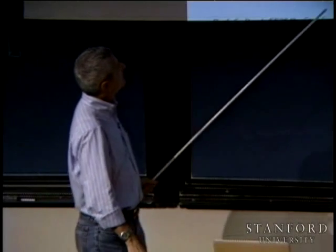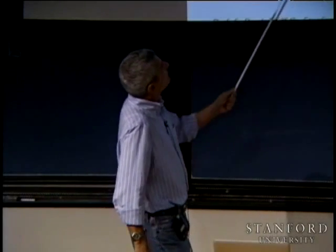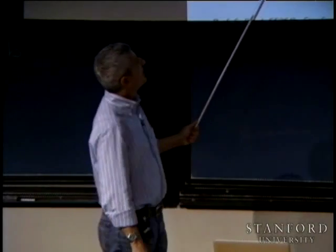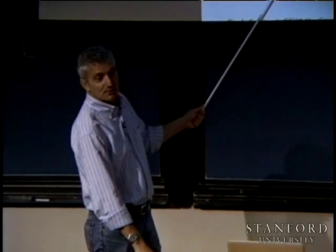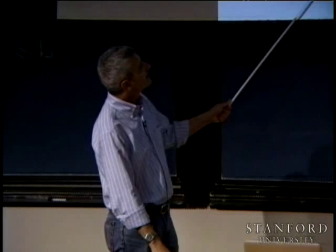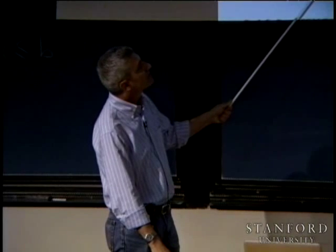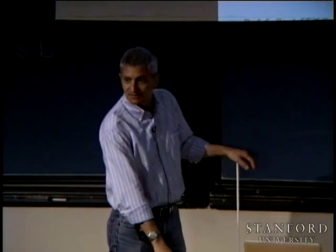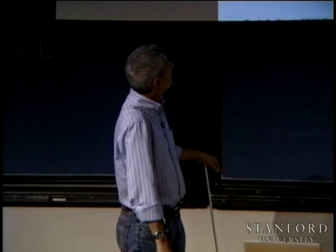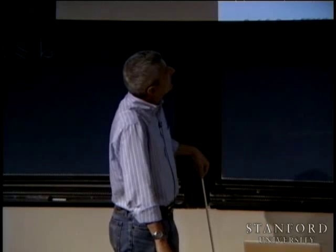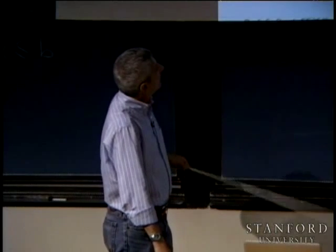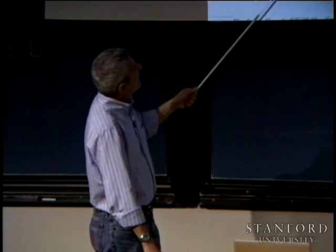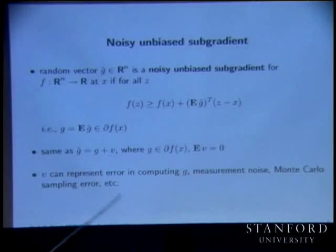Another way to say it: what comes back is a true subgradient plus a noise which is zero mean. That's a stochastic subgradient.